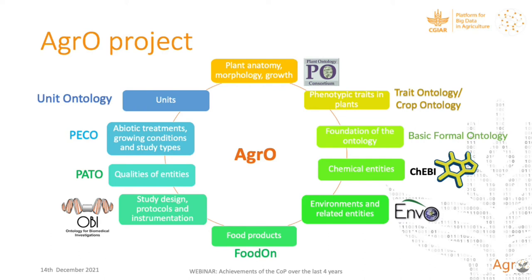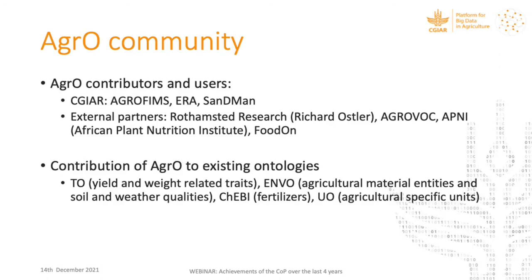Several projects contributed terms to AGRO and extended it with their domain's specificity. For instance, Rothamsted Research contributed terms related to intercropping, and other projects contributed terms related to the agroecology domain. The agronomy ontology also contributed terms to existing ontology projects — we are not just reusing ontologies but also enriching them with terms relevant to agriculture that are not specific only to the agricultural domain.